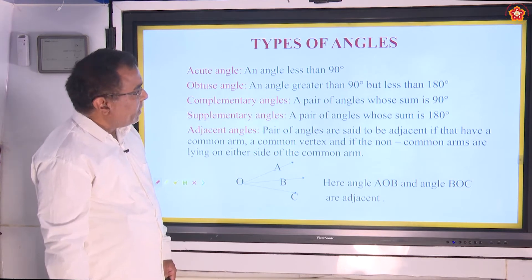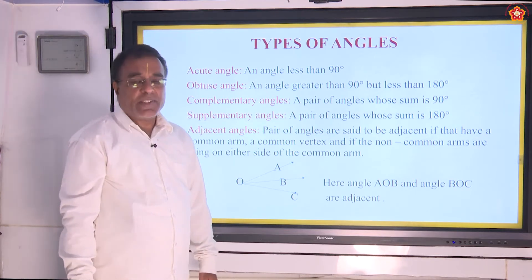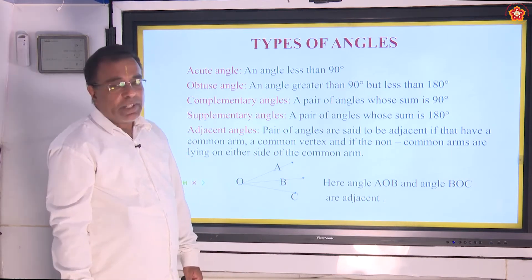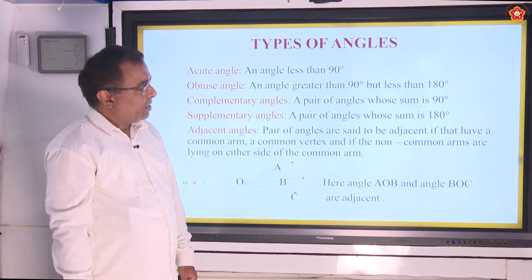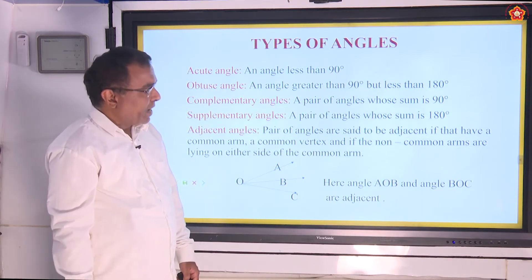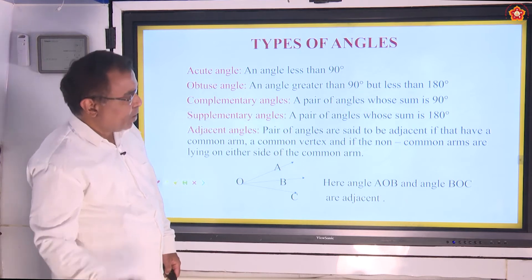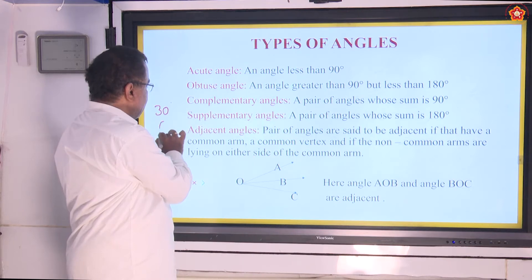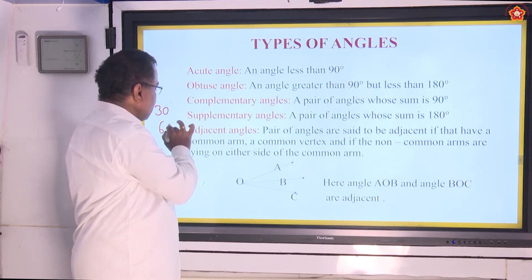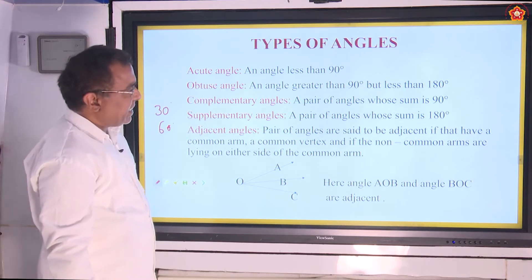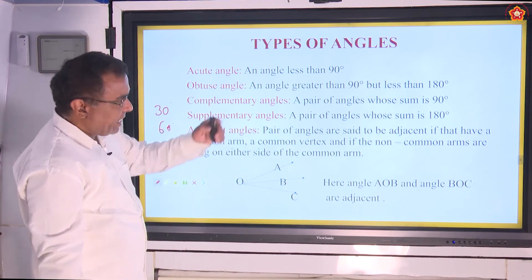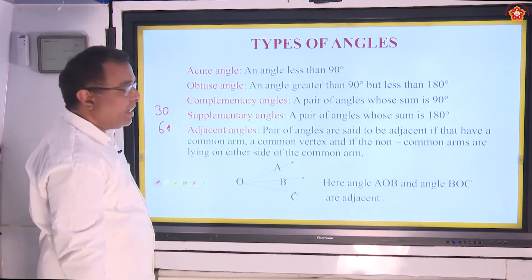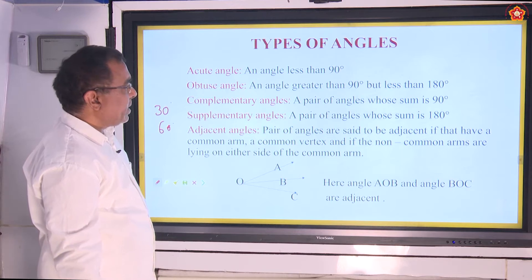Next, what are complementary angles? Suppose a pair of angles form a sum which is equal to 90 degrees, then we call them as complementary angles. It should be a pair of angles whose sum is 90 degrees. For example, let me take 30 degrees and 60 degrees — 30 plus 60 will be 90 degrees. So we say 30 degrees and 60 degrees form complementary angles.